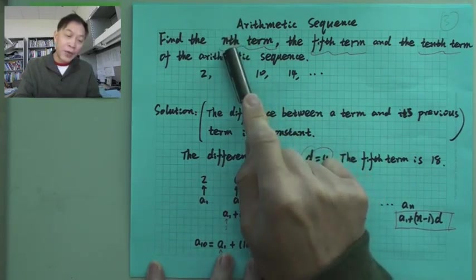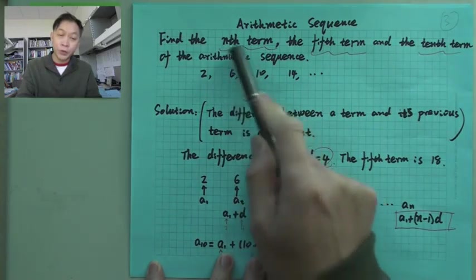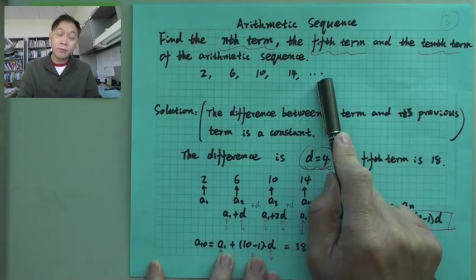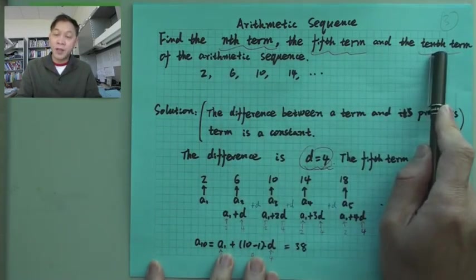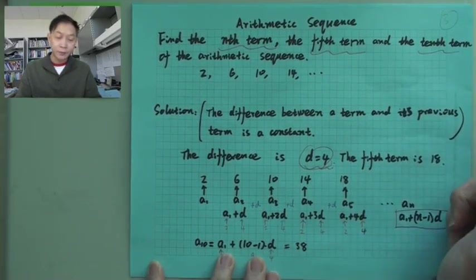N can be any number. If you choose 1, you get the 1st term. If you choose 2, you get the 2nd term. If you choose 5, you get the 5th term—it should be 18. If you choose 10, you should have the 10th term. So let's figure that out.